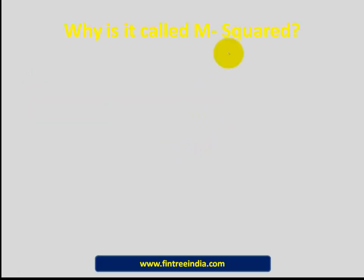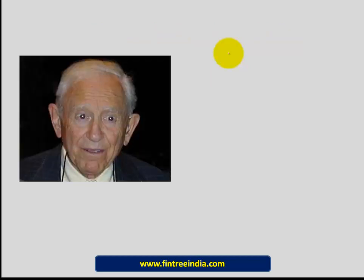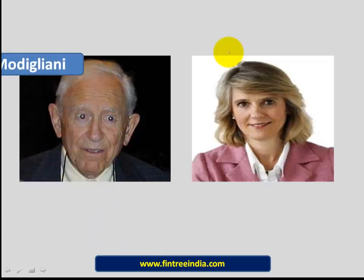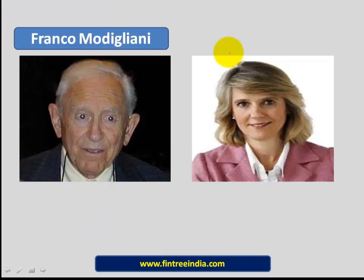I thought about this several times before one fine day I sat down on the internet and googled for it. The reason why it's called M-squared is because of the gentleman on the left, Franco Modigliani, the Nobel Award winner who received the Nobel in 1985. And on the right-hand side we have Leah Modigliani, who's the granddaughter of Franco. Both Franco and Leah presented this paper in 1997, and therefore this formula is called the M-squared formula.